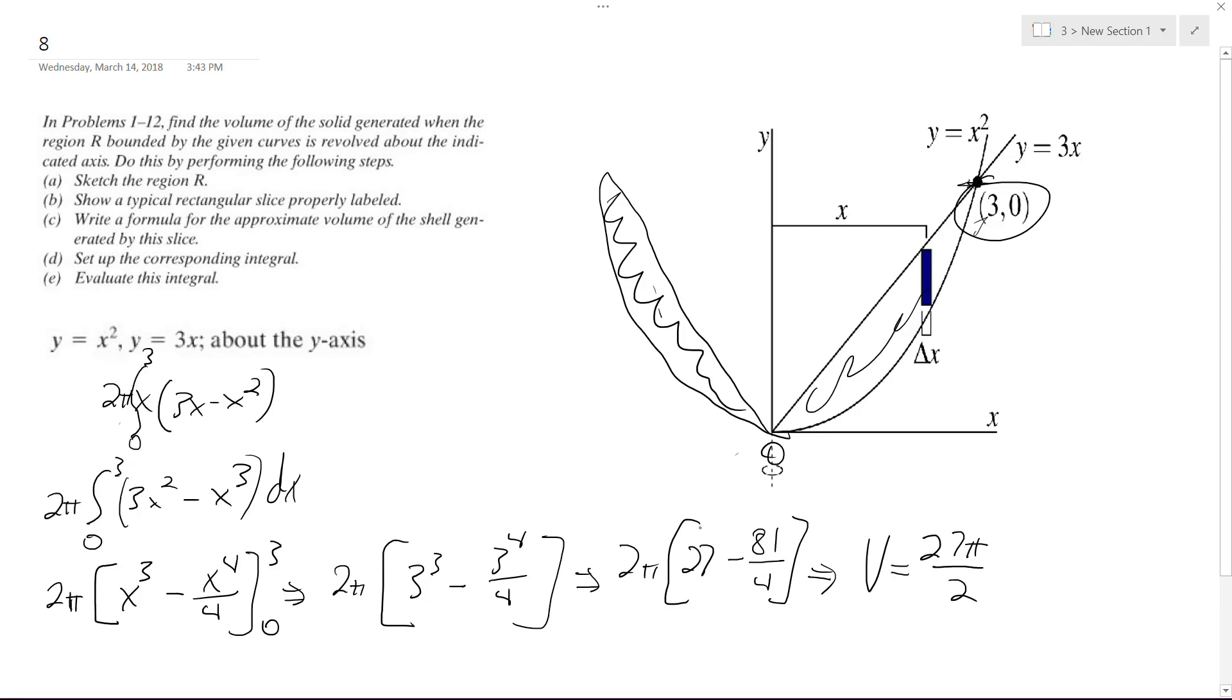Because what this ends up being is—162 over 4. No, that's not right. 54, 108, divided by 4.